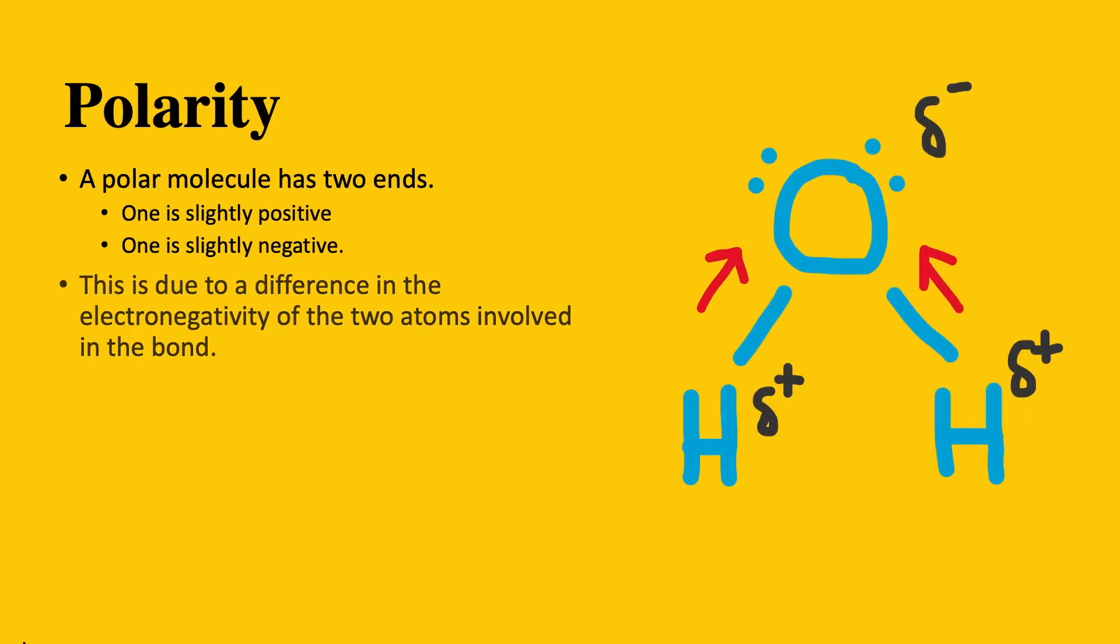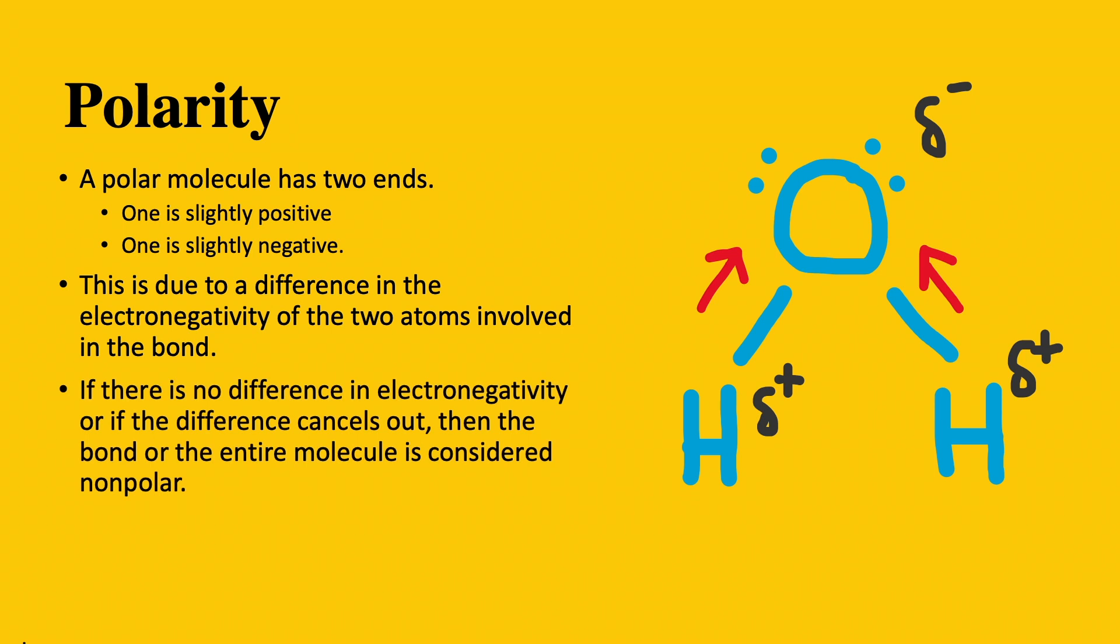A polar molecule has two ends. One end is slightly positive and the other is slightly negative.